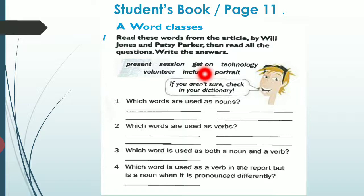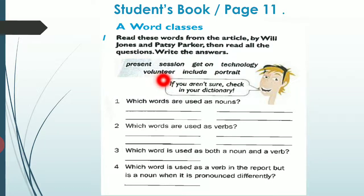We have get on بمعنى ينسجم — to like being with somebody or something. We have technology. And volunteer — volunteer بمعنى متطوع أو يتطوع، بحسب إذا كان عندي الword class noun أو verb. We have include بمعنى يتضمن. And we have portrait بمعنى صورة — سواء هاي صورة كانت drawing أو painting أو photograph.